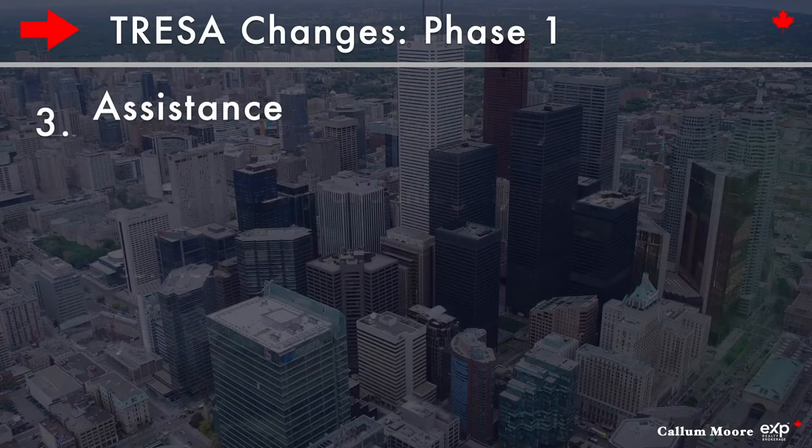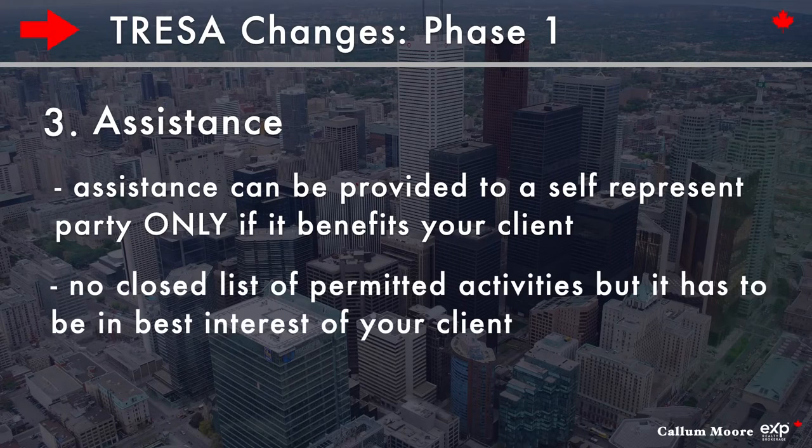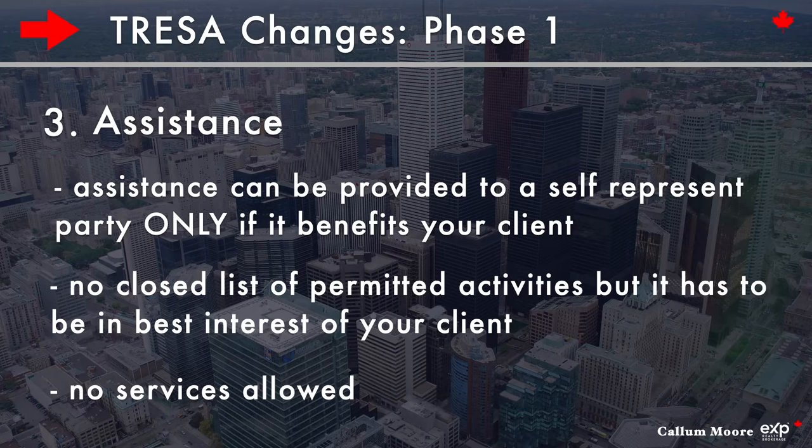Third, what is assistance? Assistance can be provided to a self-represented party, but only if it benefits your client. There is no closed list of permitted activities, but it has to be done in the best interest of your client. For example, you can show a property to a self-represented party if that property is listed by yourself or the brokerage representing a client. But if the self-represented party wants to see similar properties in the area, you cannot show them other properties you aren't representing — that would be considered providing a service.